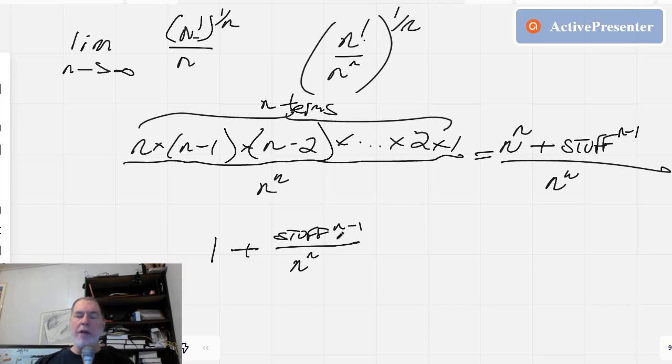divided by n to the n. So we've got a polynomial of degree n minus 1 all over a polynomial of degree n—or not a polynomial, just n to the n. So that, as n gets